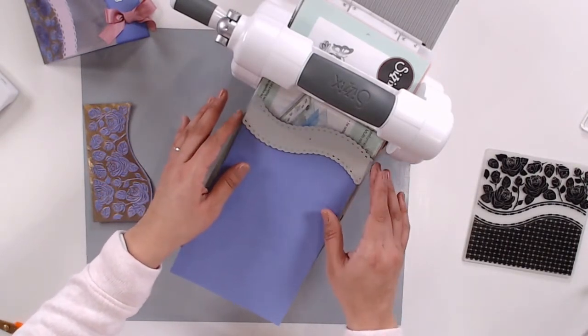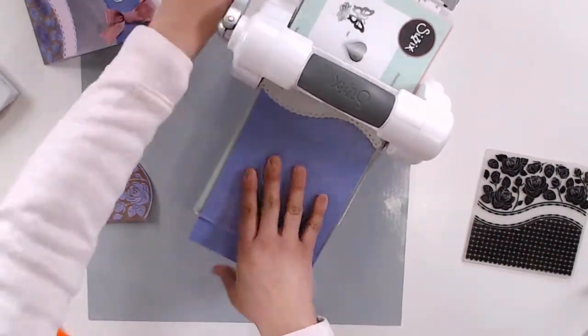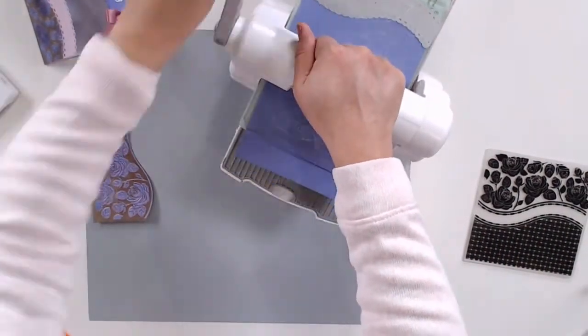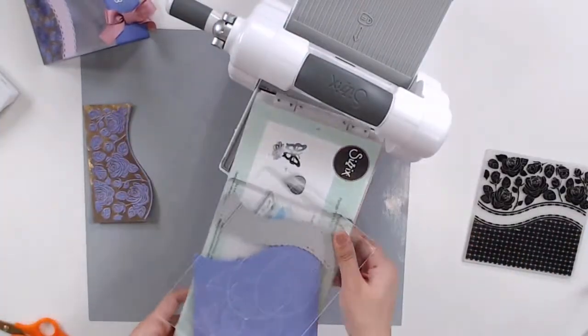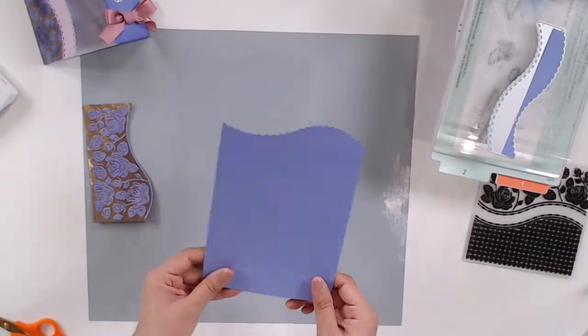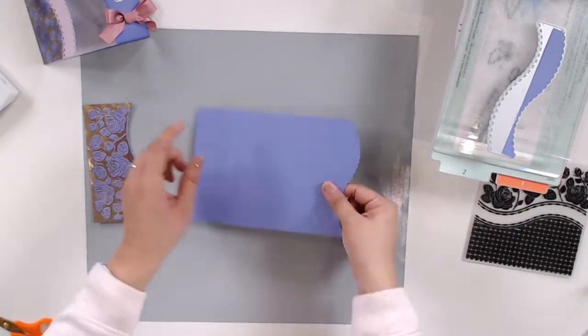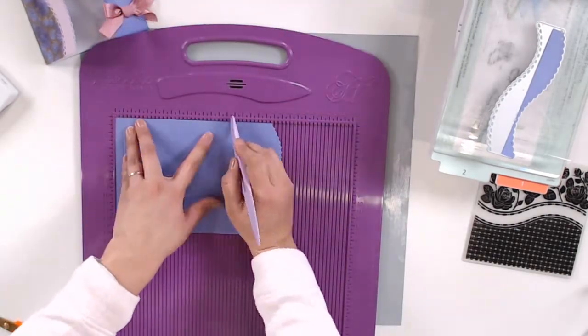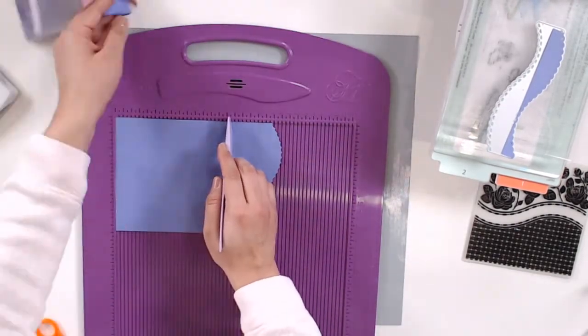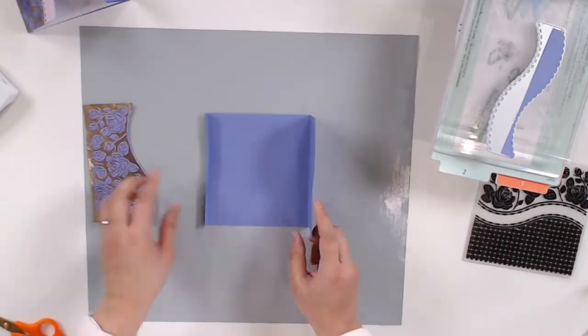This piece of card is cut to 15 centimeters by 22 centimeters, and I just wanted to die cut the banner at the edge to create a fun little element on my card. I'm going to be scoring my card at one centimeter and 14 and a half centimeters to create that tri-fold action. I'm folding my scored lines and making sure everything is going to line up nicely.